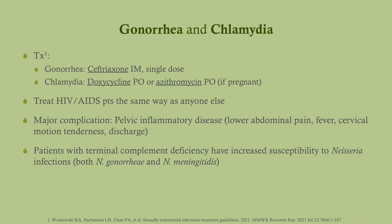The treatment has changed since training began around 2000. What we used to do was dual treatment for everyone. Now, if the patient has gonorrhea, the treatment is ceftriaxone. If the patient has chlamydia, ideally it's doxycycline. However, if they're pregnant, we go with azithromycin — we never use doxycycline in a pregnant patient because it is teratogenic. If the patient has HIV and AIDS, you treat them the same way as anyone else.